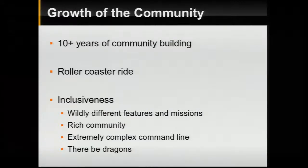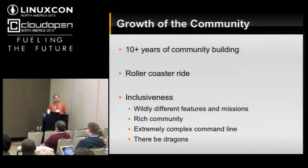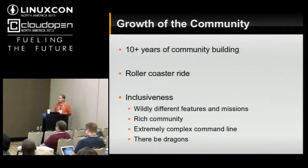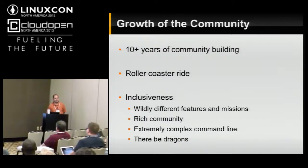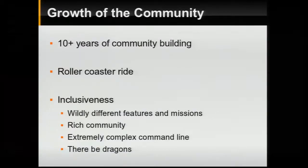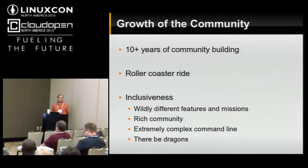In terms of the growth of the community: the project's been around for 10-plus years and it's been an absolute roller coaster ride. We've had the terrible flame wars, the equivalent of the 'Linus doesn't scale' discussions upstream. The thing that's gotten us by is that we've been very inclusive. No matter how obscure your architecture is — I'll pick on OpenRISC as an example — as long as the patches are reasonable and don't hurt the rest of the tree, we'll take it. That creates a very rich but also complex community with a very complex command line and less-maintained areas of QEMU.